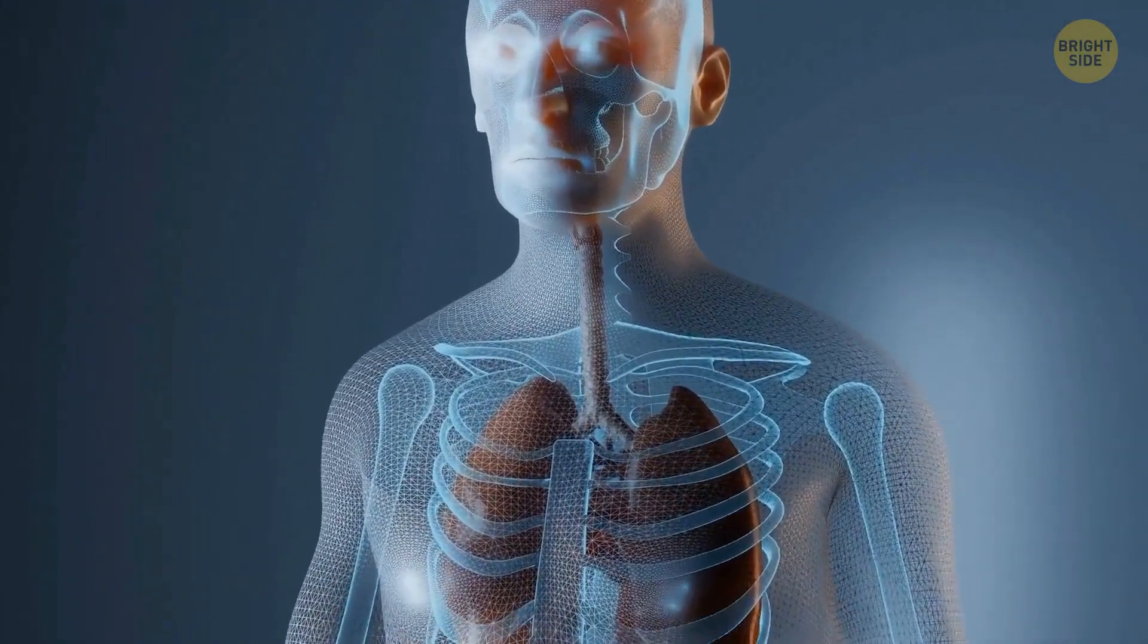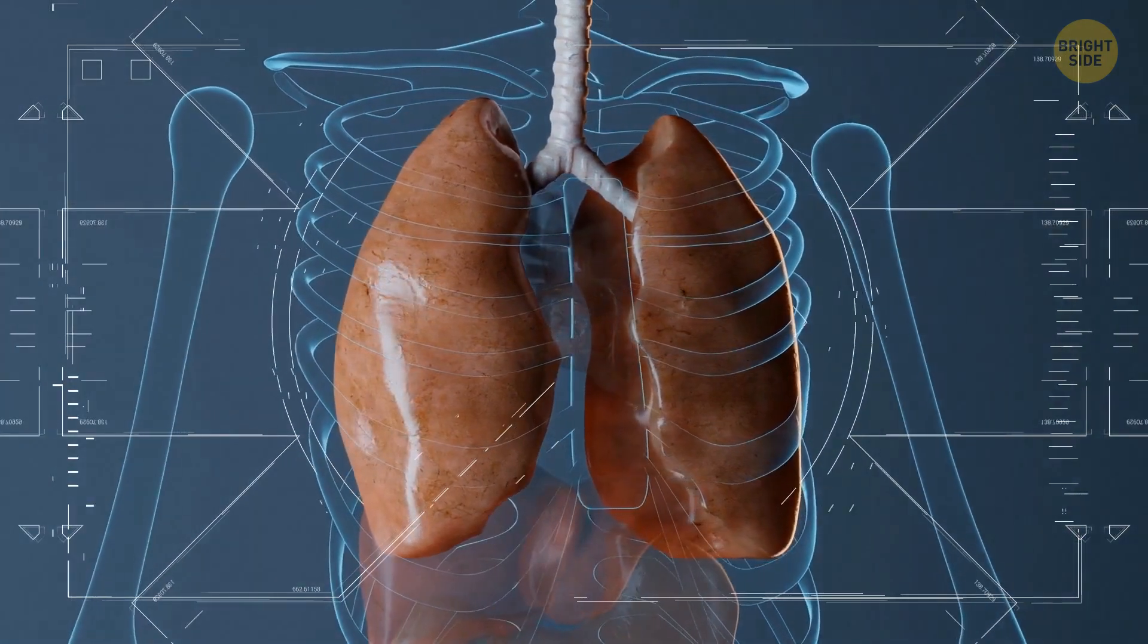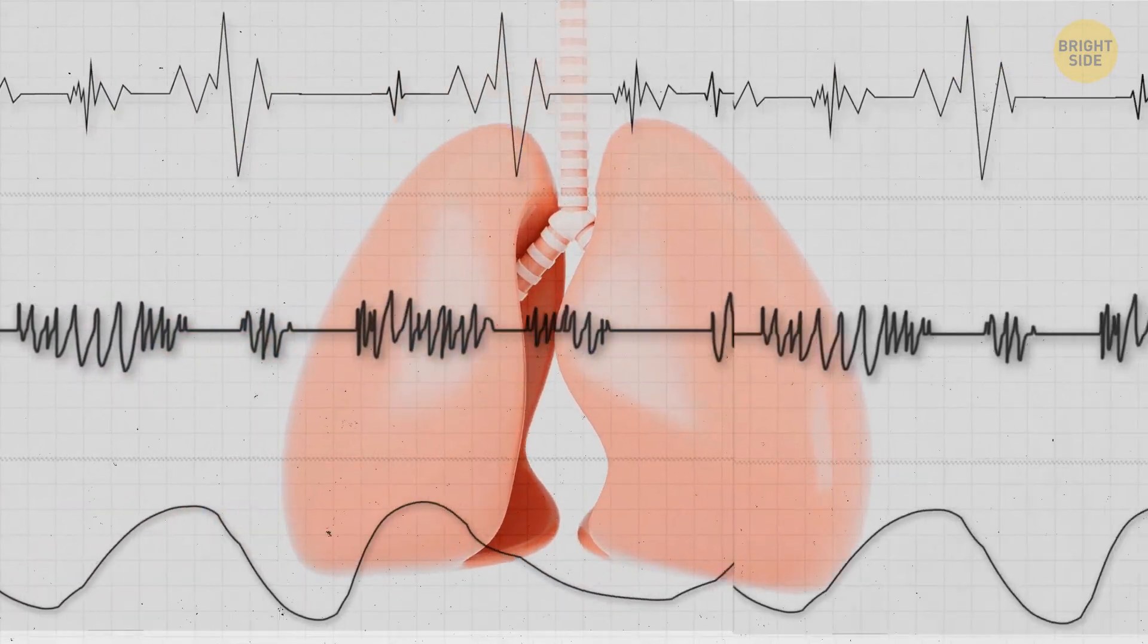Our breathing mechanism is fascinating too. For grown-ups, the regular breath count is about 12 to 20 breaths per minute. Infants, however, have a faster rate of 30 to 60 breaths per minute.